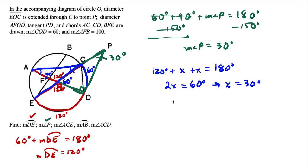The measure of angle ACE is 30 degrees, because angle ACE is part of this isosceles triangle where one angle is 120, so the two remaining angles have to be equal, making ACE 30 degrees.